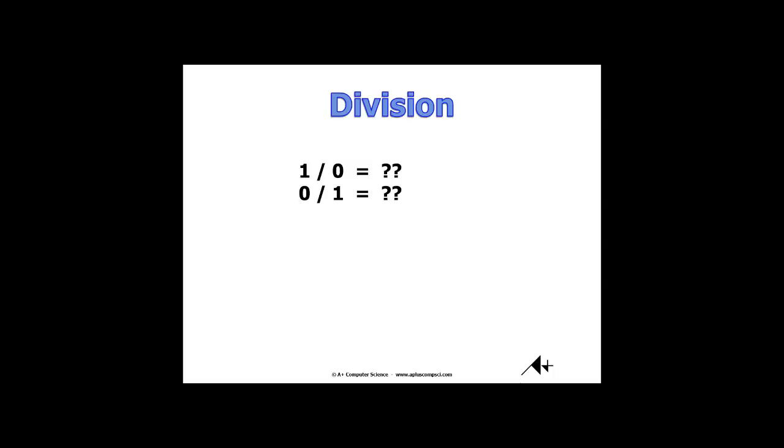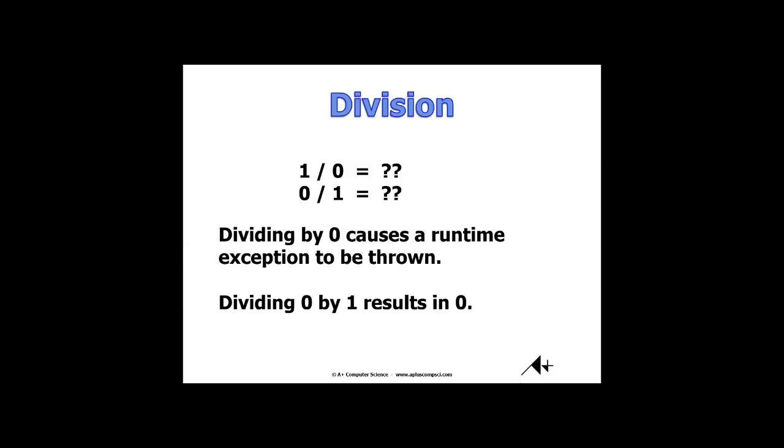Here we have 1 divided by zero. Anytime you do division by zero, that's a runtime error. Whenever you divide zero by something, the result is zero because obviously nothing can go into zero. So your number of division processes would be zero.